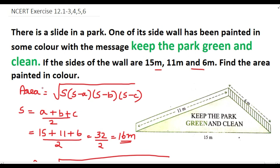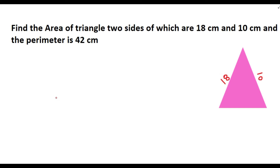The area painted in color is 20√2 square meters. Now the second question: find the area of a triangle where two of its sides are 18 cm and 10 cm, and the perimeter is 42 cm.